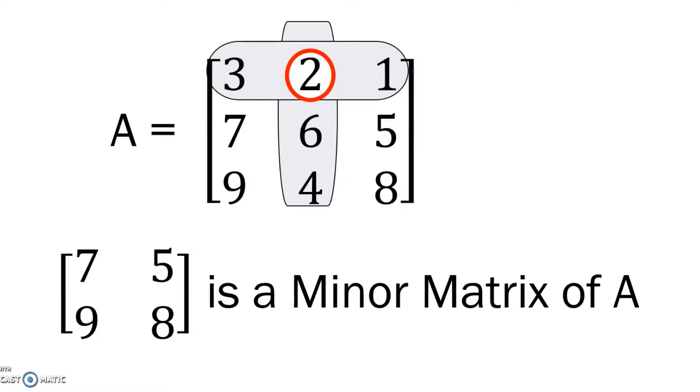And you can apply this to any location of an element in the matrix and find their corresponding minor matrix. And a minor matrix is nothing but a matrix obtained by eliminating certain rows and columns in a matrix.